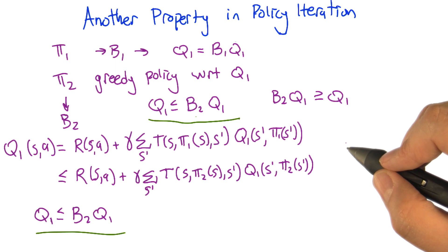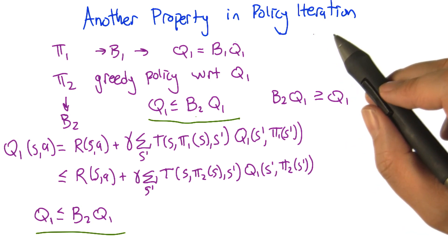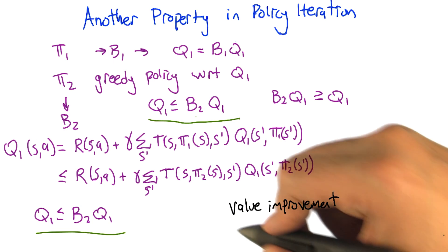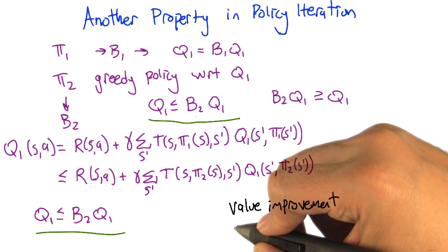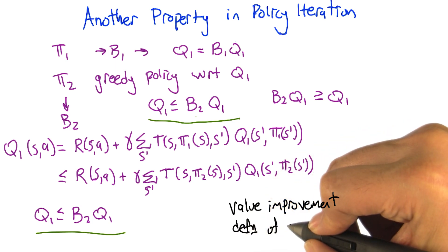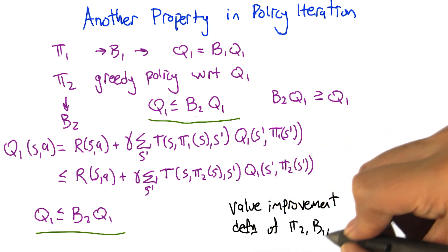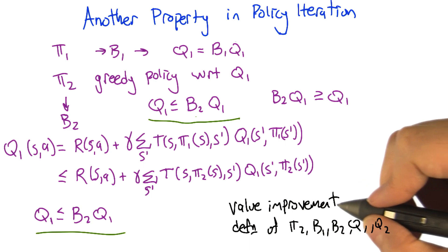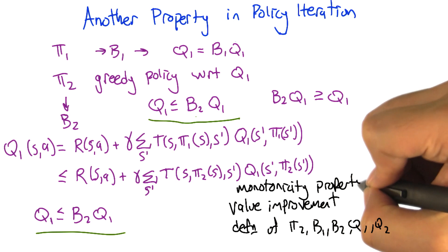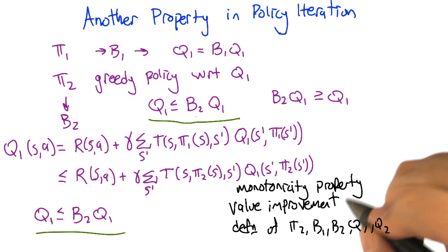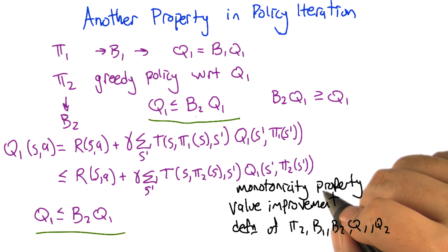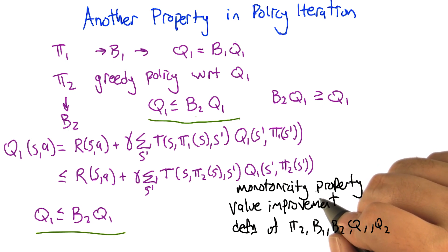So now we have all the pieces we need. We had one property called monotonicity — we should call this new property something too: value improvement. With value improvement, and other things like the definitions of Pi2, B1, B2, Q1, Q2, and the monotonicity property, we have everything needed to prove that policy iteration moves in the right direction — that it actually improves the policy, or in the case where the policy is already optimal, it doesn't make it worse; it leaves it the same.